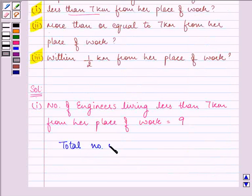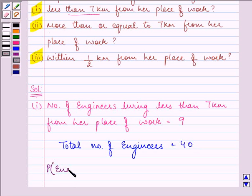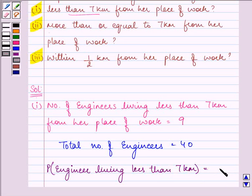Total number of engineers is equal to 40. So the probability that engineer is living less than 7 km is equal to 9 out of 40. This is the required answer of the first part.